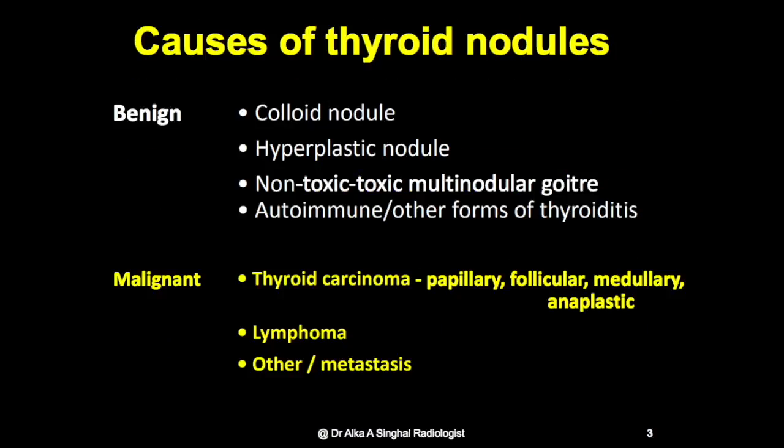Common benign types include colloid nodules, which we can screen out by the comet-tail artifacts, hyperplastic or toxic nodules, and autoimmune thyroiditis. The malignant ones include thyroid carcinoma — PTC, follicular, medullary, anaplastic, lymphoma, and metastasis. These are the ones we have been trying to filter out using the triple criteria for suspicious nodules.